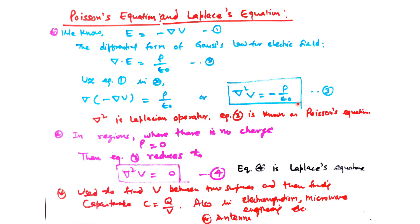The Poisson equation is del squared V equal to minus rho by epsilon naught. For the charge-free region, when charge density rho is zero, the right-hand side becomes zero and the equation becomes del squared V equal to zero. This is known as the Laplace equation, and these equations are used to find the potential V between two surfaces or plates, and then finding the capacitance. They are very important in electromagnetism, microwave engineering, etc.